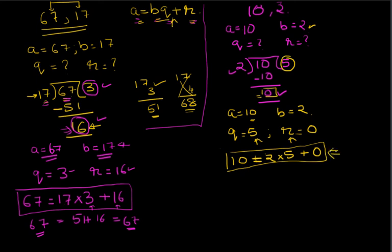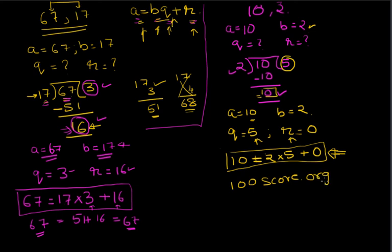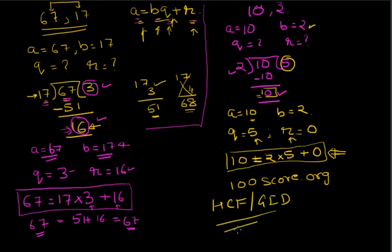We just proved our theorem with all the examples. Euclidean division theorem is nothing but division — you divide A by B to get quotient and remainder. I'm going to end this session here. You can go to henritscore.org and try to solve a couple of quiz questions I posted. We'll go over the quiz in the next session and also cover the importance of this theorem — it can be used to find HCF and GCD, which we'll cover after the quiz.